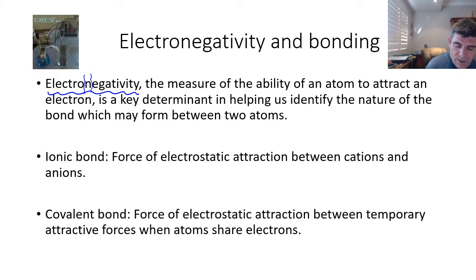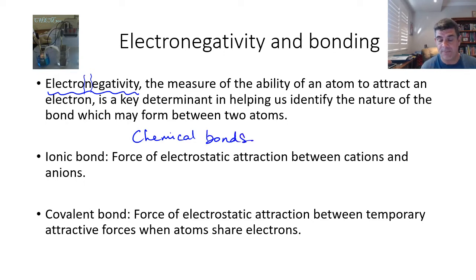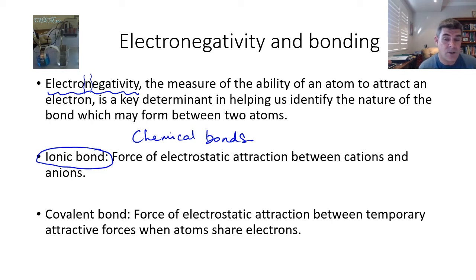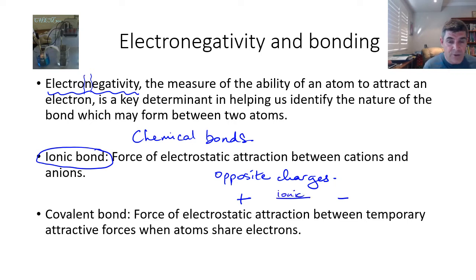We've looked at types of bonds before, but now we want to look at them in a little more detail. There are two types of chemical bonds, and really both are electrostatic forces of attraction. The first is an ionic bond, which forms when we have two charged atoms — two ions — that attract each other because opposite charges attract. The key to ionic bonds is that opposite charges attract, giving us cations (positively charged) and anions (negatively charged). This is created because of a difference in electronegativity between the atom forming the cation and the atom forming the anion.